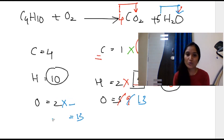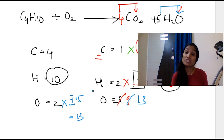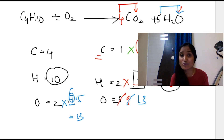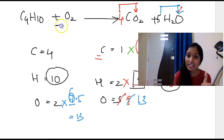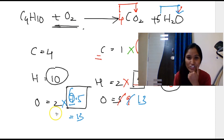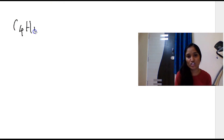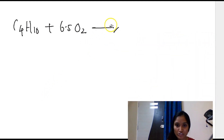How can we balance 2 and 13? Can we multiply by some number to get 13? Yes — we can use fractions. Multiply by 6.5: 2 × 6.5 = 13. The number we place in the equation as a prefix is 6.5. So the equation becomes: C4H10 + 6.5 O2 → 4CO2 + 5H2O.